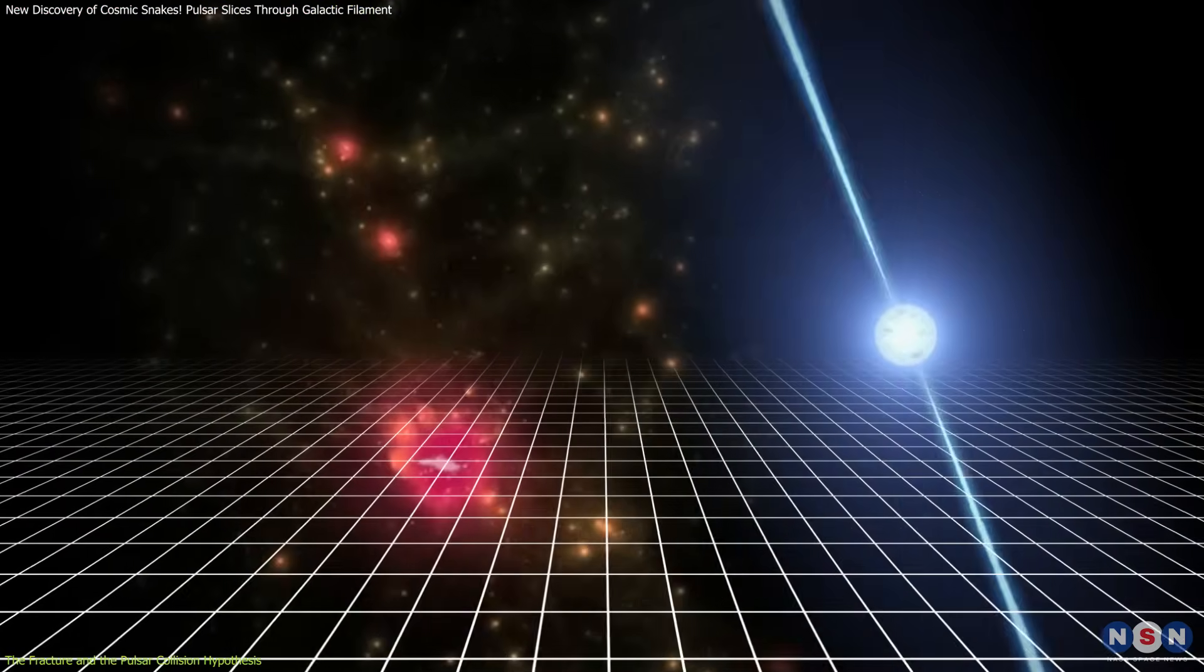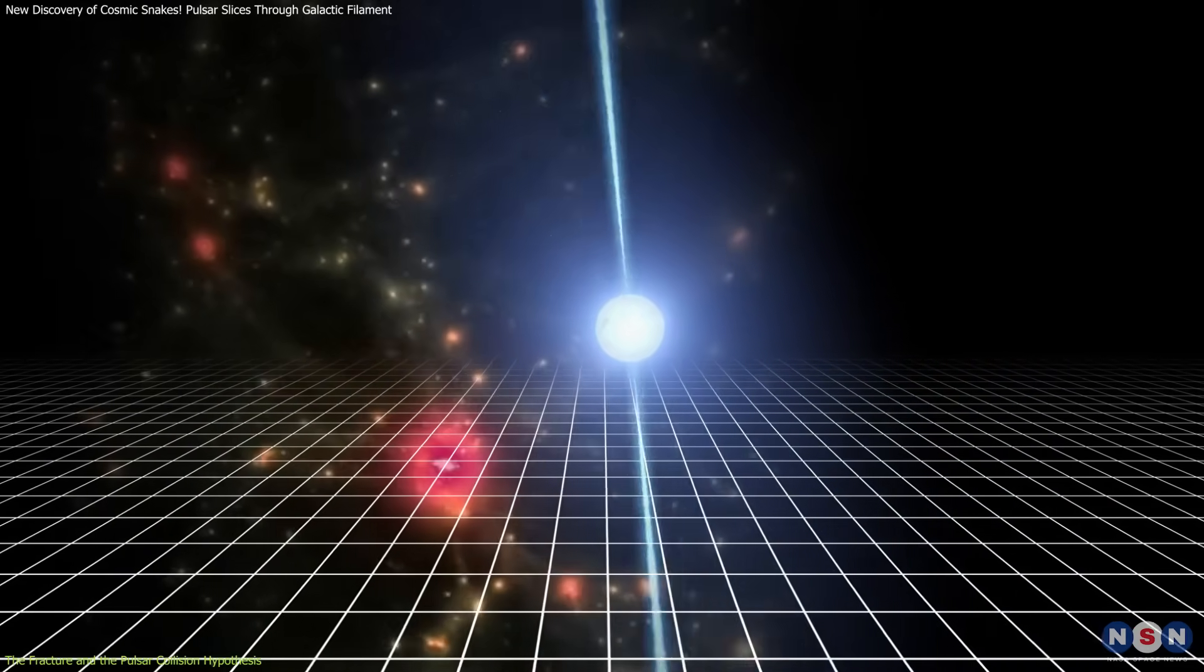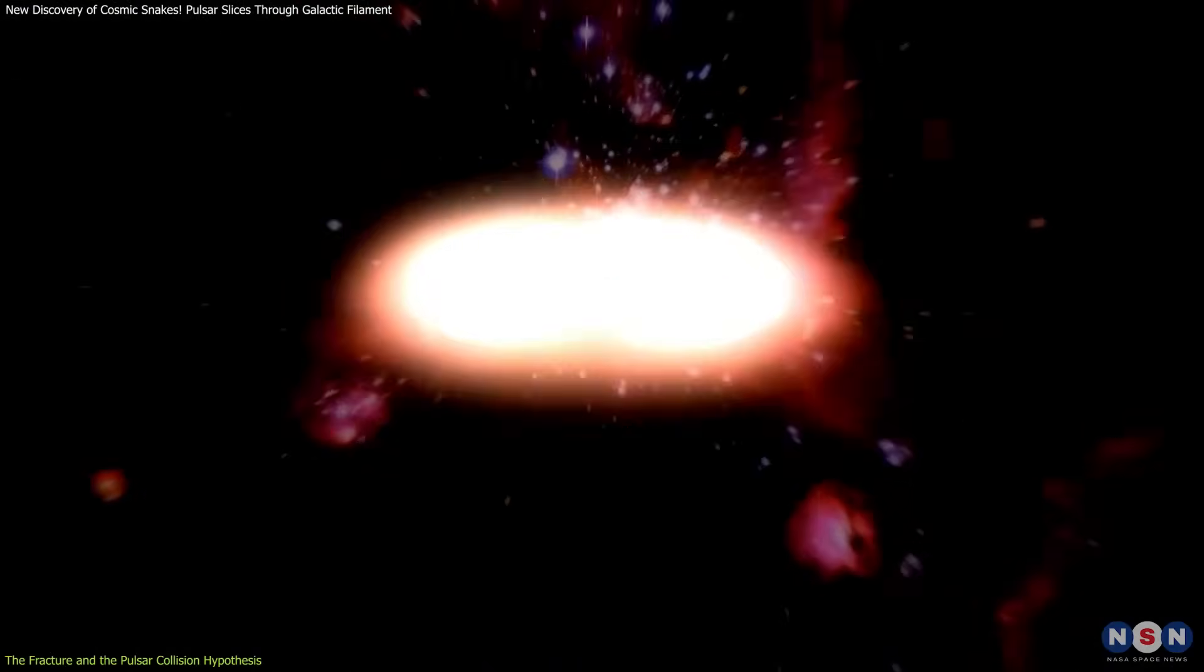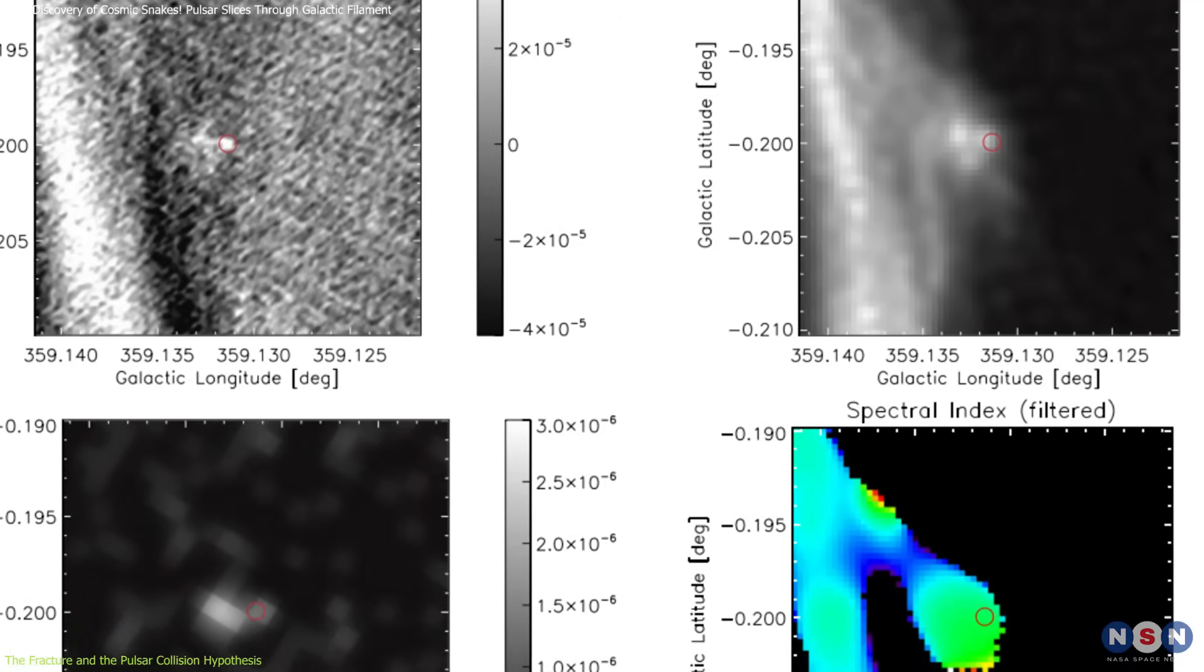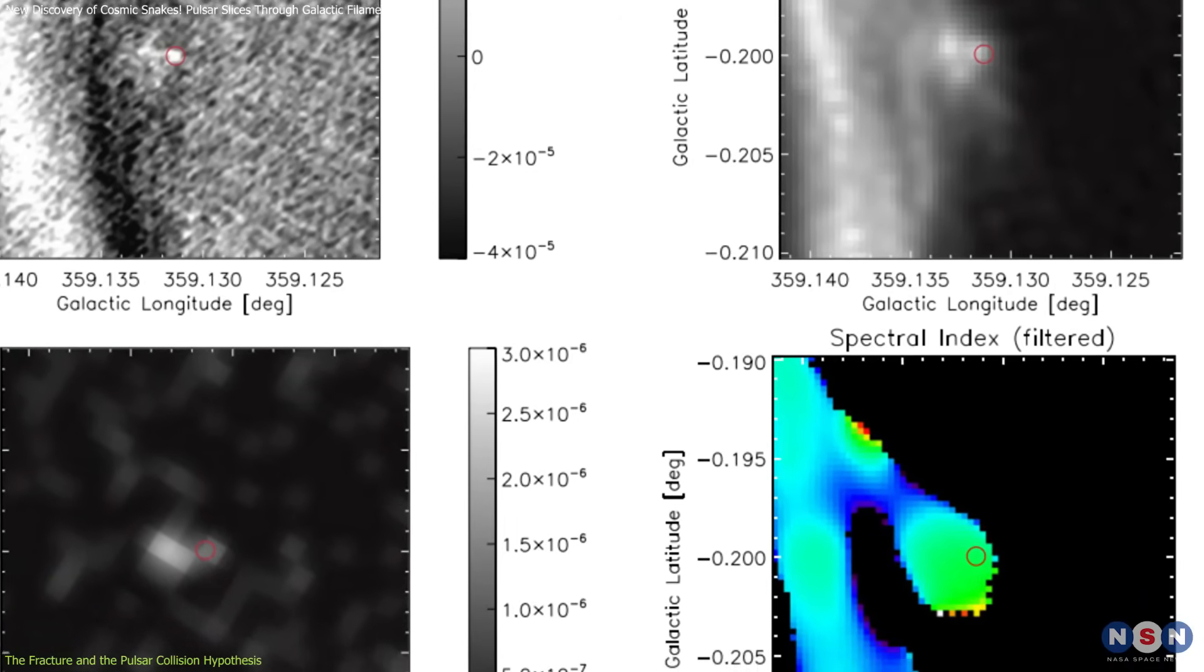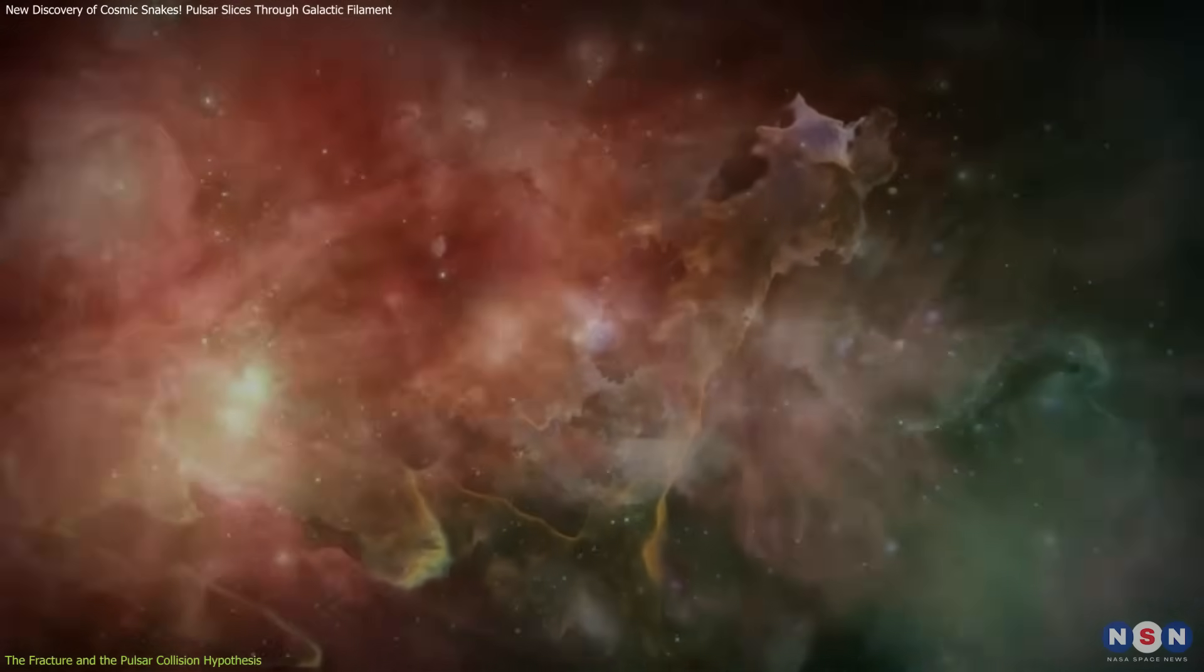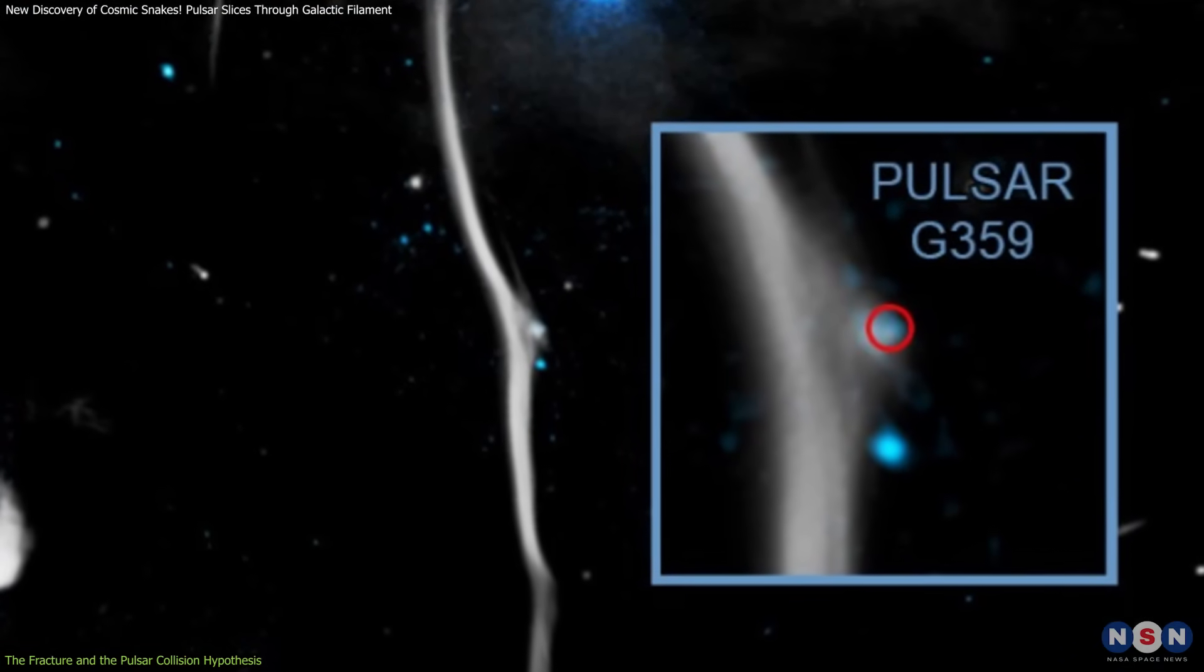Crucially, this interaction is not merely a static imprint. The collision would have compressed and disturbed the magnetic field within the filament, possibly triggering shock waves and particle acceleration. The result? A cascade of emissions, including the radio signal that first drew astronomers' attention. This isn't just a bump in a gas cloud. It's a cosmic crash site telling a high-energy story that spans light years.